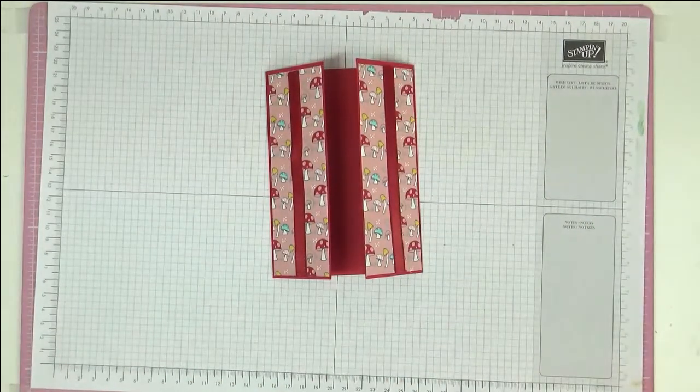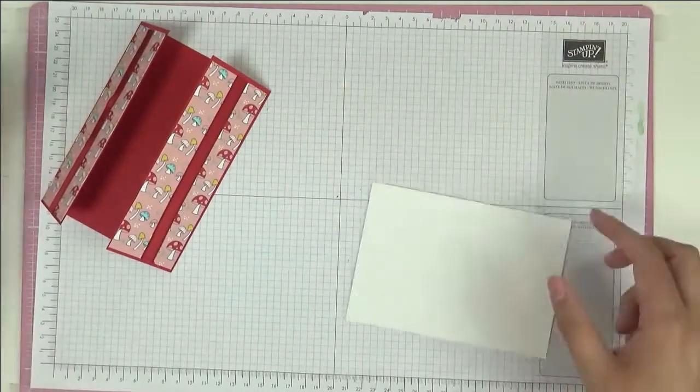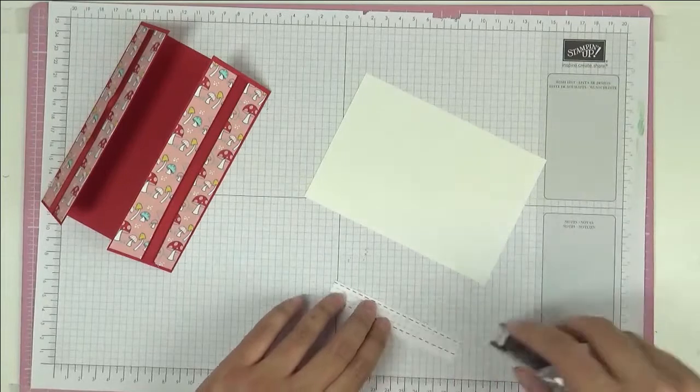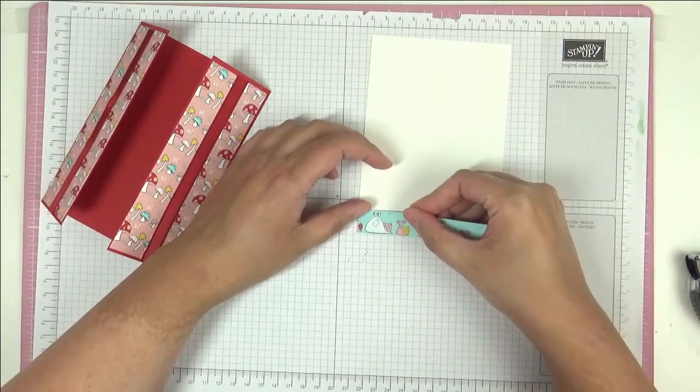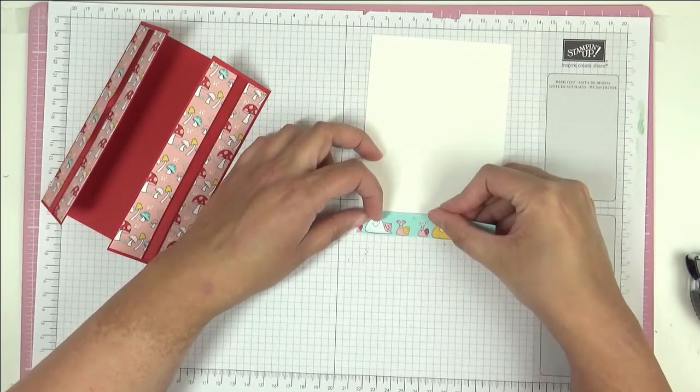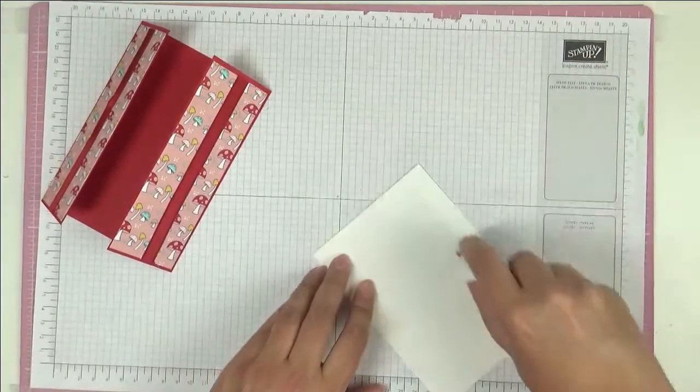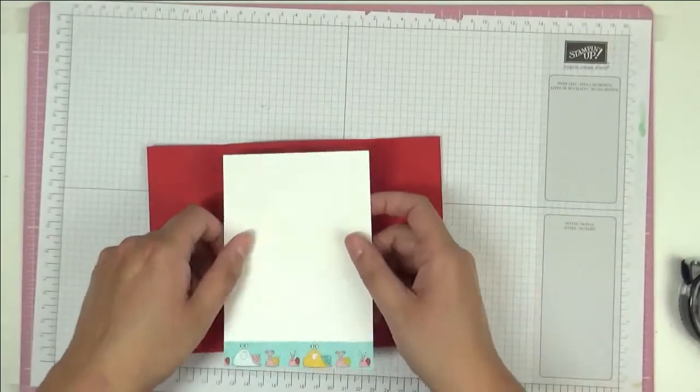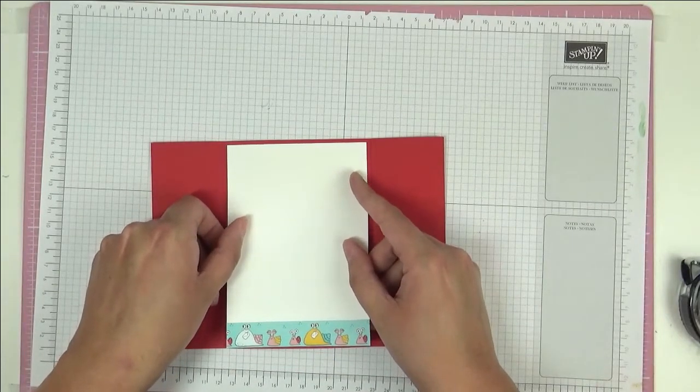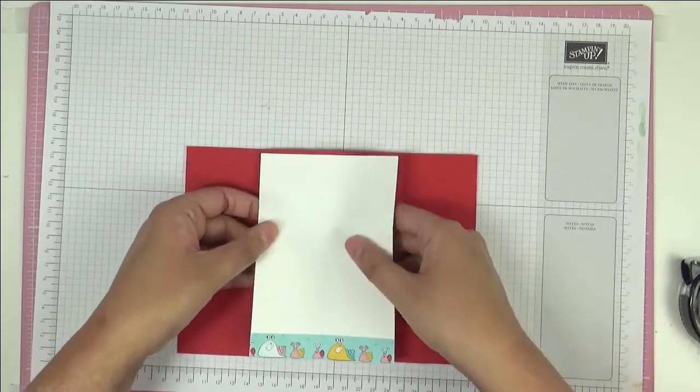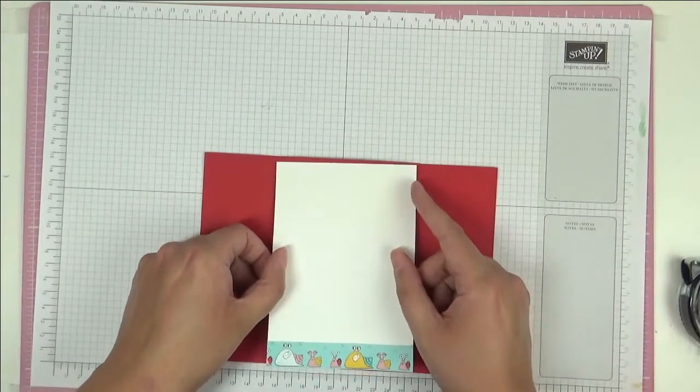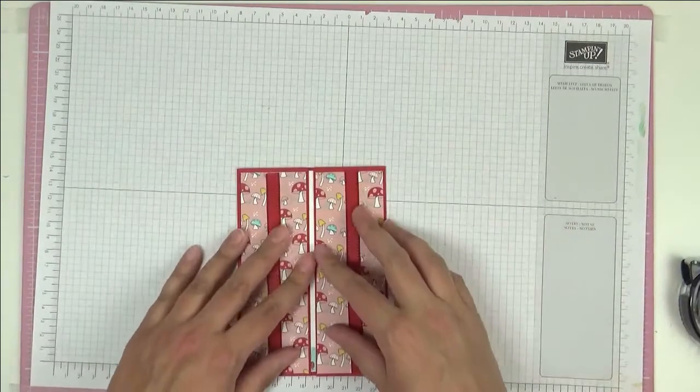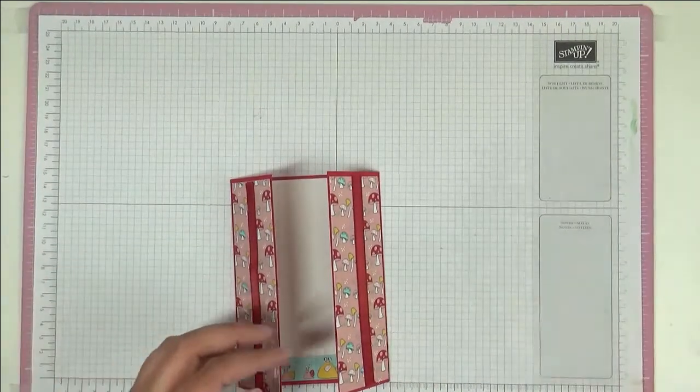Now we're going to do some work on the inside. I have a piece here of Whisper White and this measures 14.35 centimeters by 10. And then I have a little piece here of the designer series paper again, just a little strip to embellish the bottom. And I'm just going to put that along the bottom like that and then stick this to the inside. You want to try and get it straight if at all possible, not always the easiest thing. That will do. Now the fun bits.